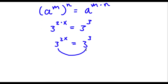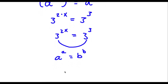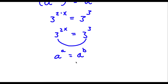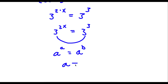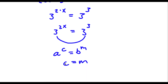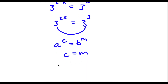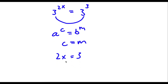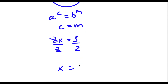Now if you notice, both of these have the same base of 3. If I have something in the form a to the power of c is equal to a to the power of m, this means that c is equal to m. So in this case, 2x is equal to 3. To solve this, simply divide both sides by 2 — these two cancel out, and I'm left with x is equal to 3 over 2.